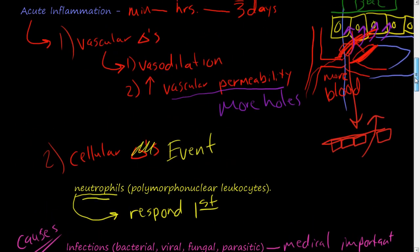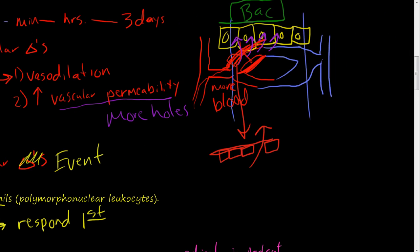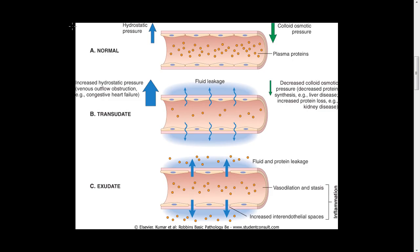Now I want to go back and talk more about the vascular changes, using a picture from Basic Pathology Robbins, 8th edition, by Kumar. So you have the normal blood vessel with plasma proteins and different structures inside the blood, and one-cell-thick arterial walls. When you have vasodilation, what happens is you are increasing the hydrostatic pressure because there is a ton of blood flow to the area.